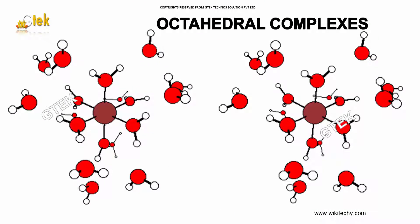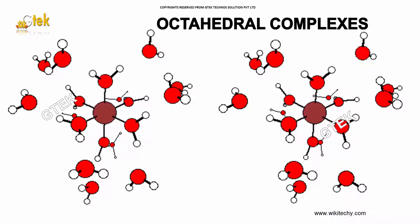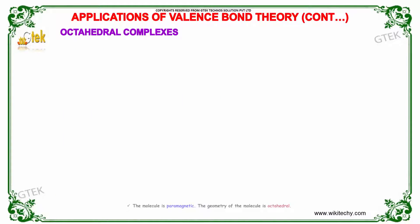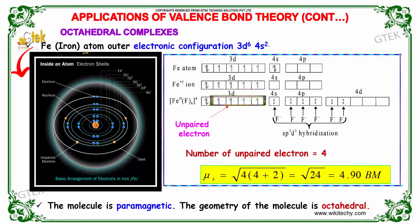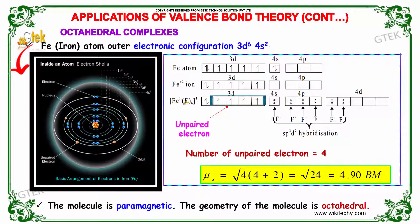Let's discuss octahedral complexes. The iron atom has an electronic configuration of 3d6 4s2. If you remove Fe2+, the 4s is gone. With F6 fluorine ligands, you have 4 unpaired electrons.